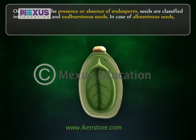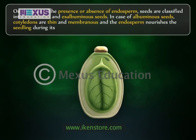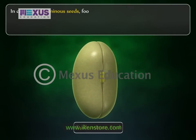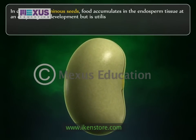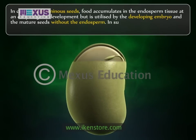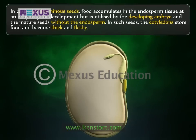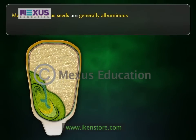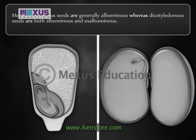In albuminous seeds, cotyledons are thin and membranous, and the endosperm nourishes the seedling during its early development. In exalbuminous seeds, food accumulates in the endosperm tissue at an early stage of development, but is utilized by the developing embryo, and the mature seeds lack endosperm. In such seeds, the cotyledons store food and become thick and fleshy. Monocotyledonous seeds are generally albuminous, whereas dicotyledonous seeds can be both albuminous and exalbuminous.